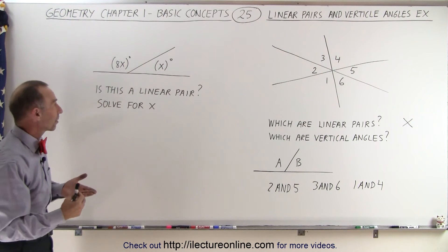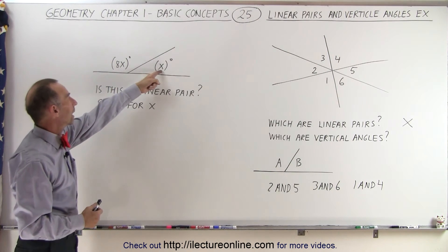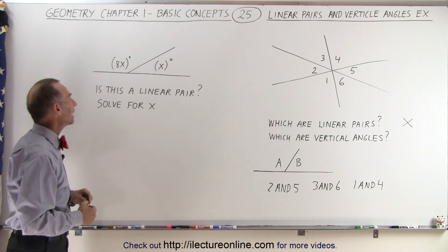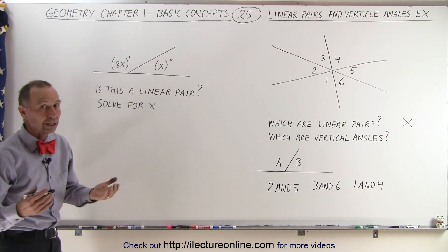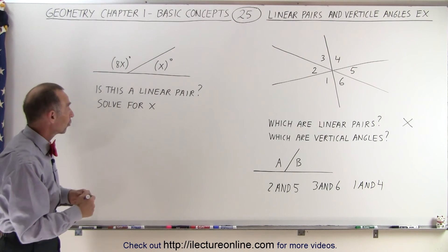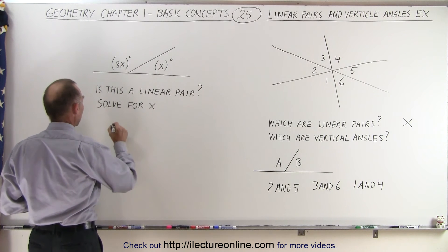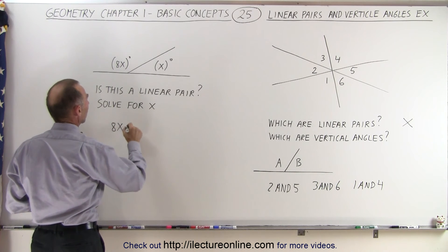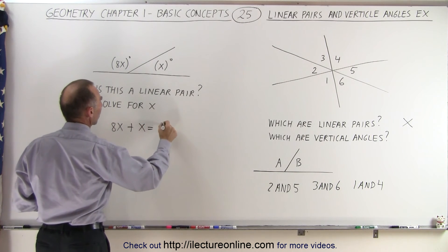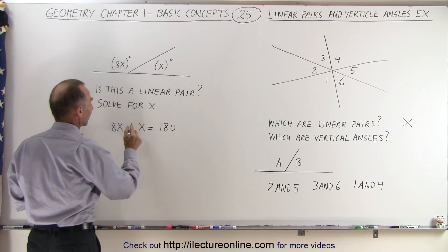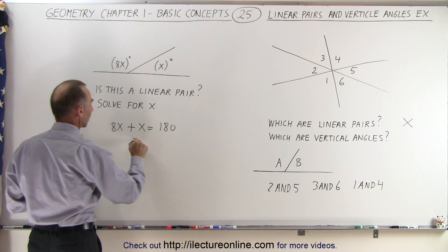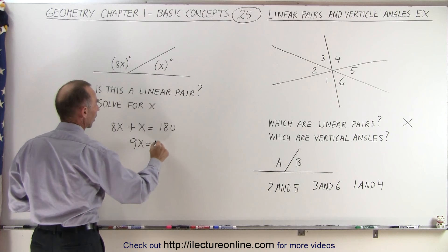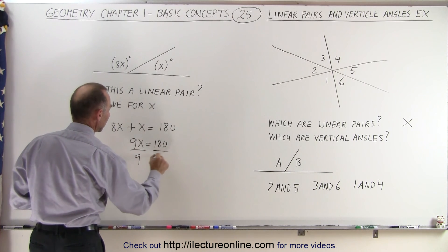Now we're supposed to solve for x. We have this angle being x degrees and this angle being 8x degrees. But we know that the sum of the measure of those two angles must add up to 180. So we can say that 8x plus x must equal 180. Add this together, we get 9x equals 180 degrees. Divide both sides by 9.